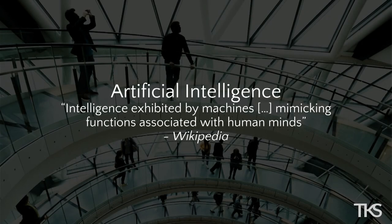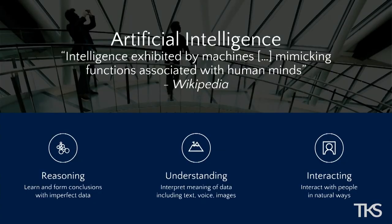So what is artificial intelligence? There are many different ways of explaining it, but this is what Wikipedia says: intelligence exhibited by machines and mimicking functions associated with human minds. At Microsoft we look at it in three pillars: reasoning, understanding, and interacting.